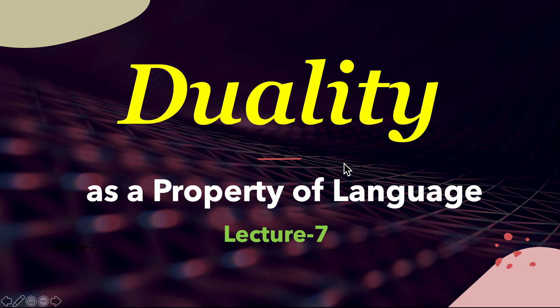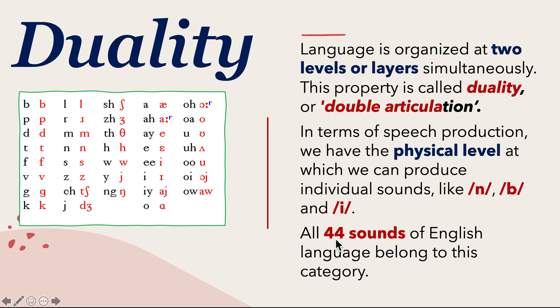Hello and welcome to the topic: duality as a property of language, lecture 7. Language is organized at two levels or layers simultaneously. This property is called duality, or double articulation.